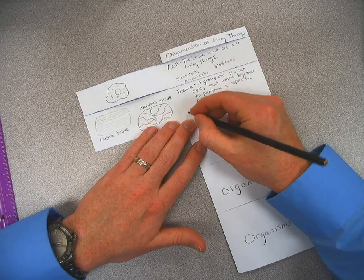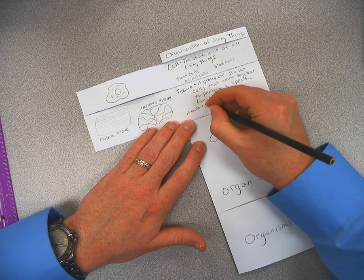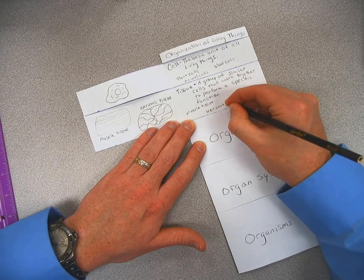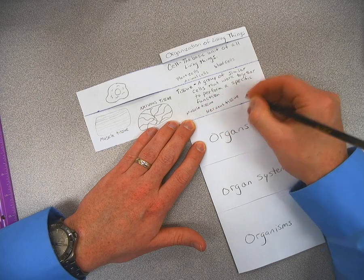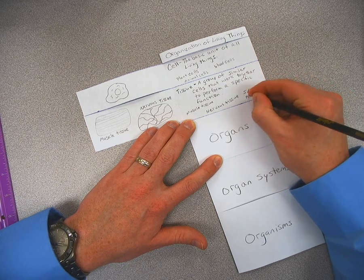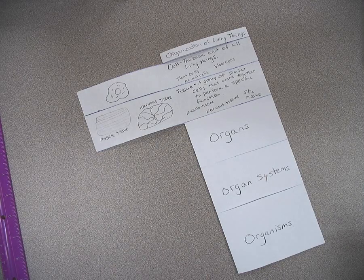Okay. We have the muscle tissue. We have nervous tissue, and we have skin tissue. So those are some examples down there as well.